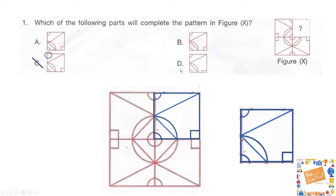Option C does not have a shape in the topmost corner, so that's not our option. Option D has a rectangle instead of a square in one of the corners, so it's not our option either. Option A has some sort of intersection which does not appear in our figure, so that's also incorrect. The correct option is option B.